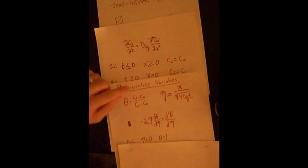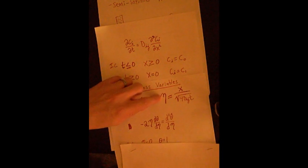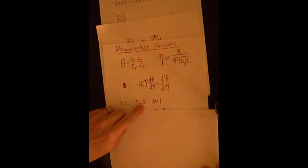So if we want to transform that, we want to put in x equals 0, which is right here, so that would mean eta is equal to 0. So that would be that boundary condition.